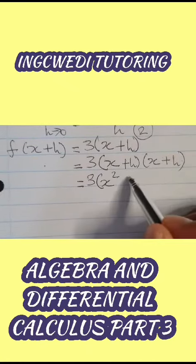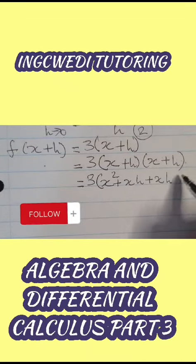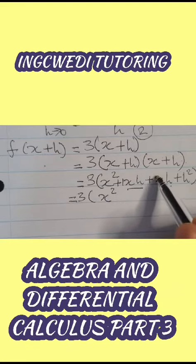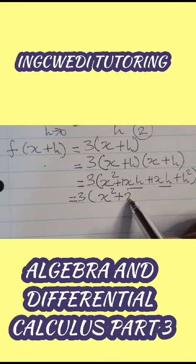x times x, x times h, x times h, h times h. So one xh plus another, that is 2xh.